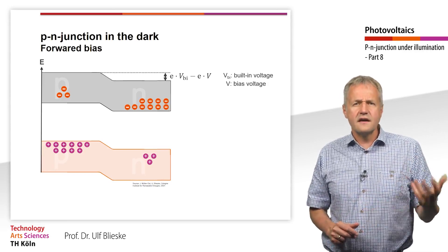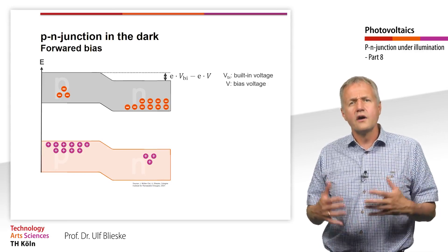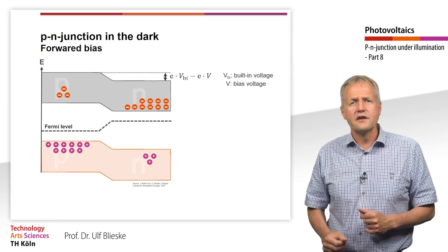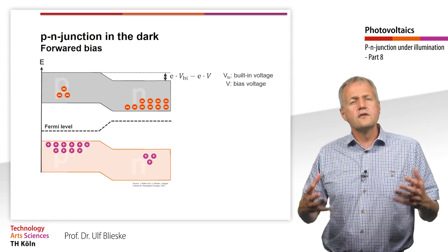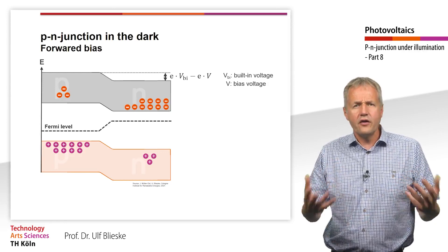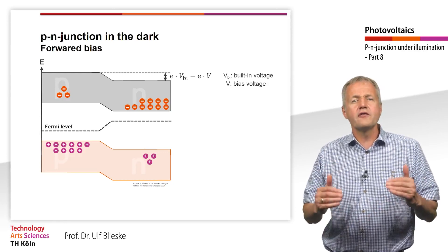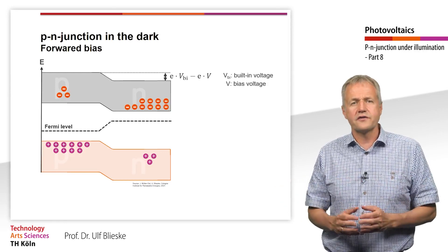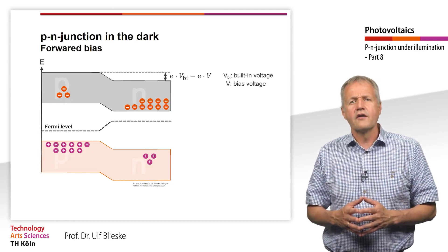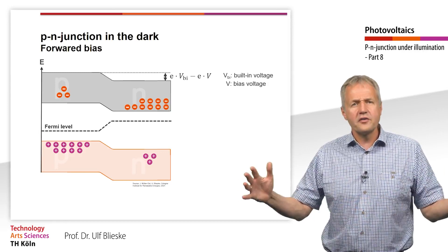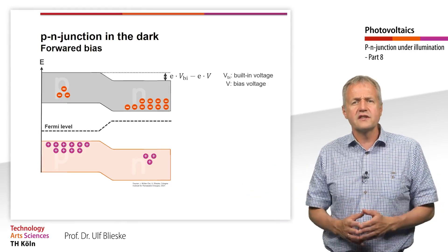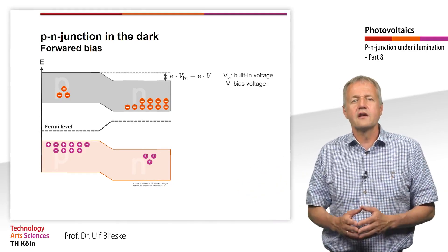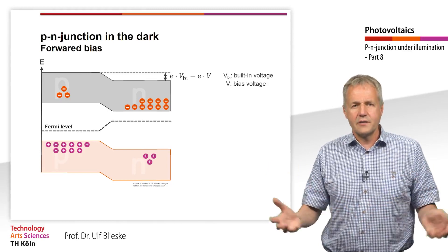Since there is now an external voltage applied to the semiconductor, it is no longer in equilibrium. Therefore, the Fermi level is no longer constant across the semiconductor. Far away from the space charge region, the Fermi level corresponds to the Fermi level at equilibrium.